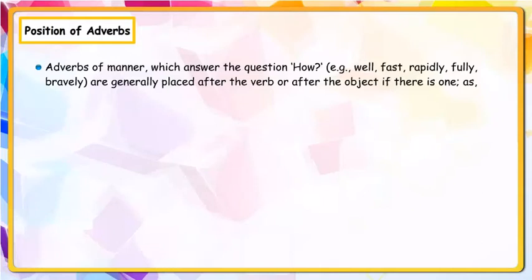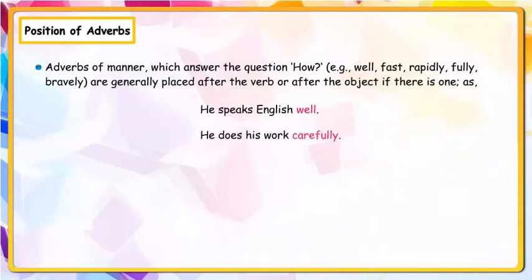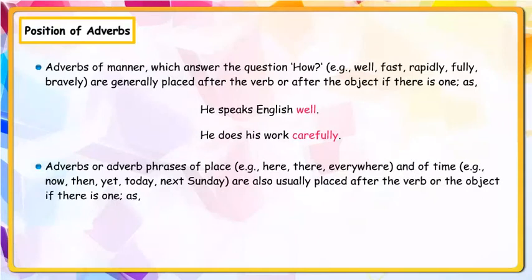Position of adverbs. Adverbs of manner, which answer the question 'How?' — examples: well, fast, rapidly, fully, bravely — are generally placed after the verb, or after the object if there is one. Examples: He speaks English well; He does his work carefully.